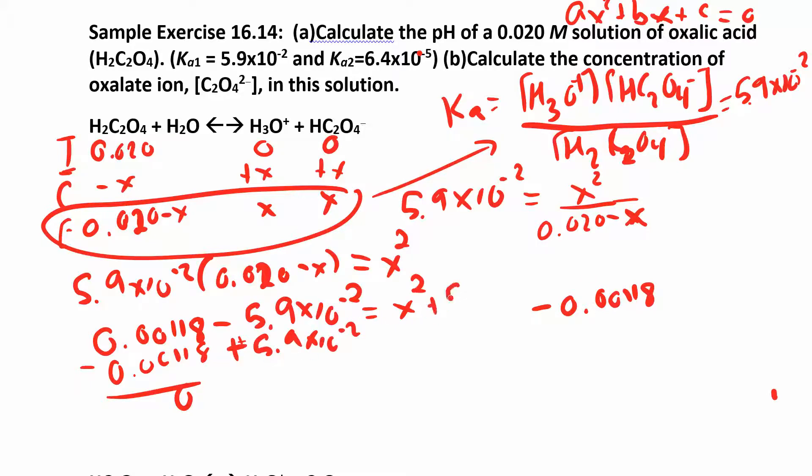We have a is equal to 1, right? So you just look at what's in front of the x squared, that's a 1. b is right here - oh I dropped my x. When you multiply through here you have an x, make sure you don't lose that x or it won't make any sense. b is 5.9 times 10 to the negative 2 and c is negative 0.00118.